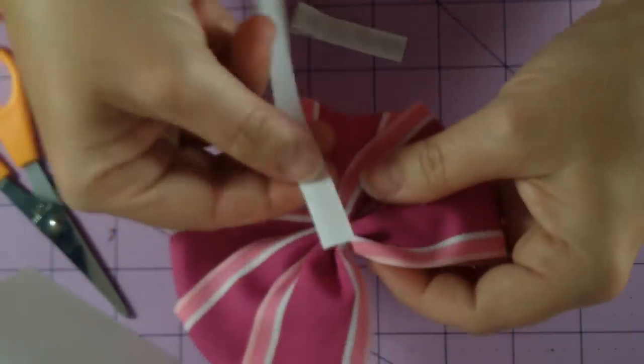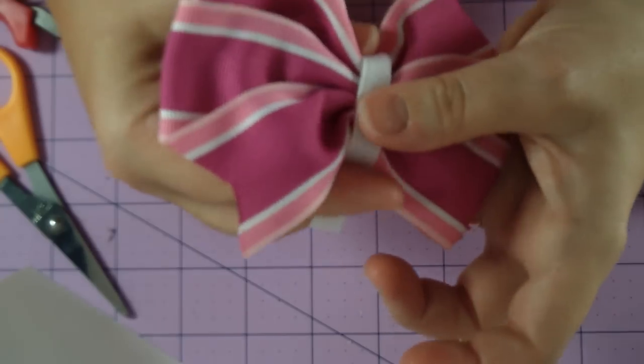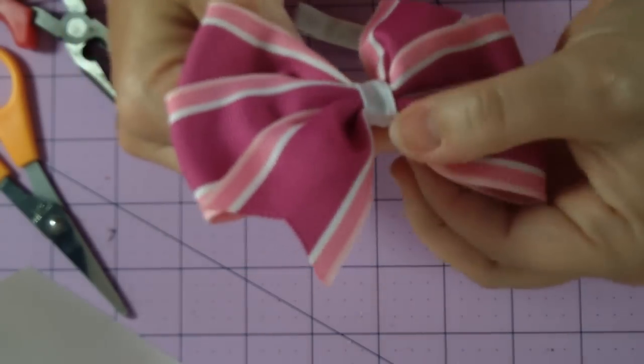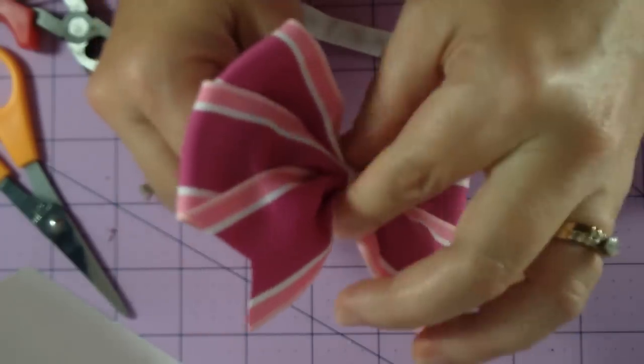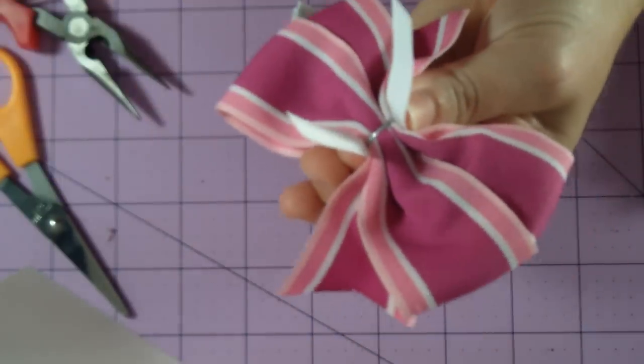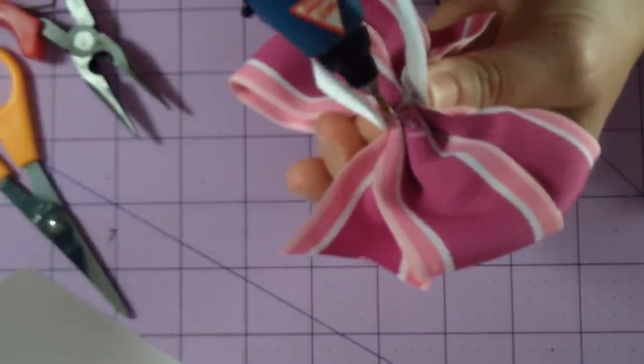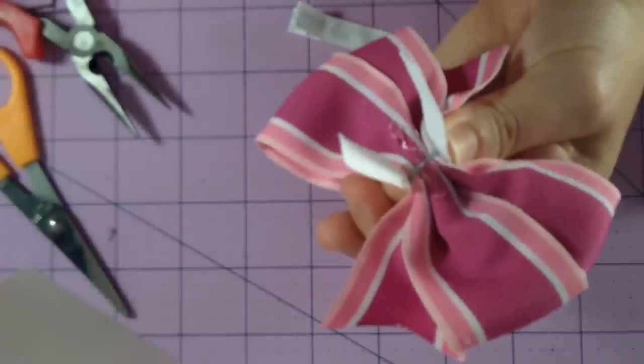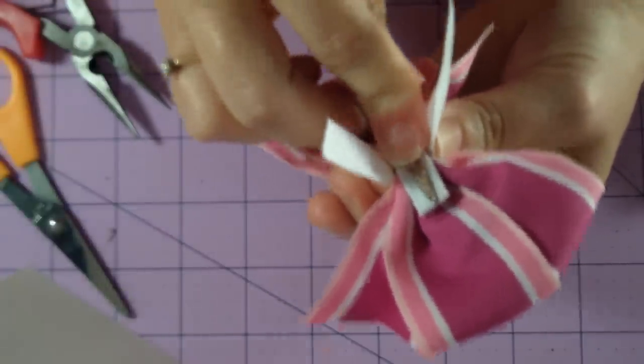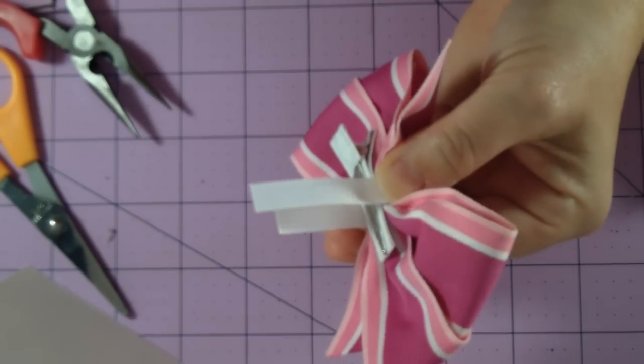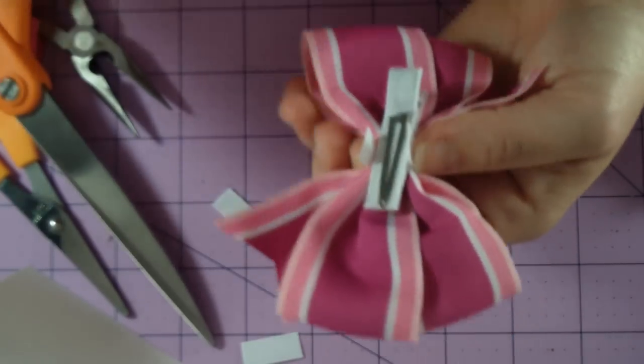You can either do a knot or for this one we're gonna do a flat. For this I'm just gonna wrap it around and then you just want to make sure you pull out your sides here, hold it with your fingers, turn it over. I'm gonna put my glue gun up inside there on the sides, glue it, and then glue my clip right there. We're gonna trim our extra piece and glue that down.